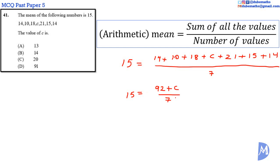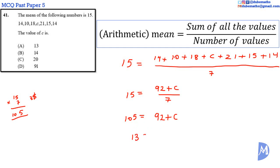Solving for C, multiplying 7 on both sides: 15 multiplied by 7. The 7 cancels to remain with 92 plus C. Subtracting 92 on both sides: 105 minus 92 is equal to 13, and 92 minus 92 is 0, so we remain with C. Therefore C is equal to 13. The answer is A.